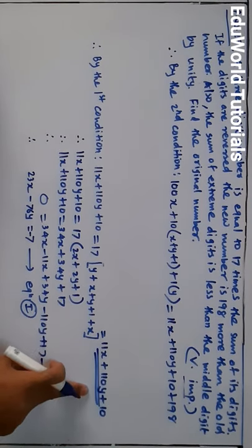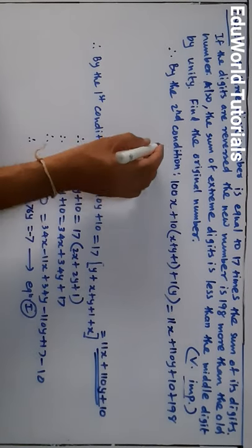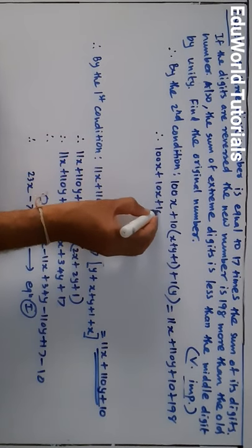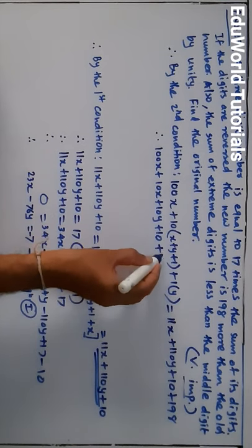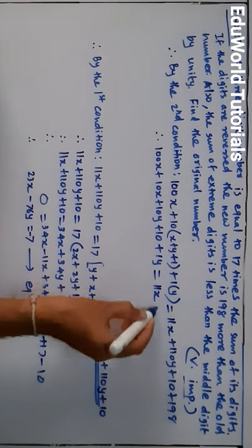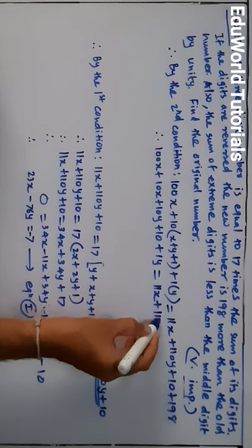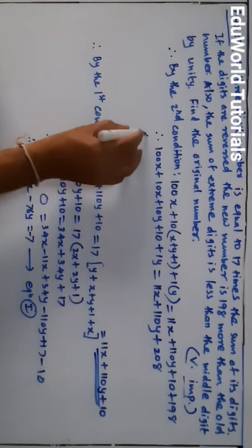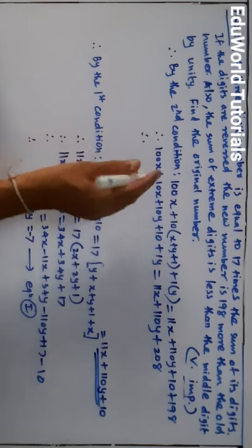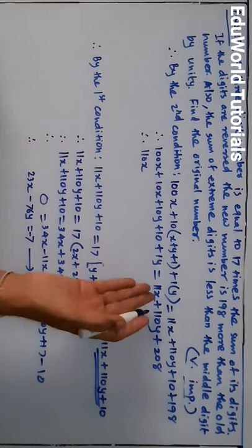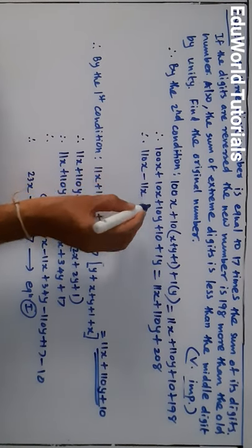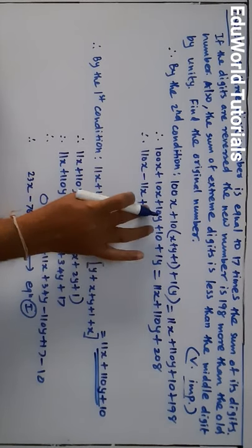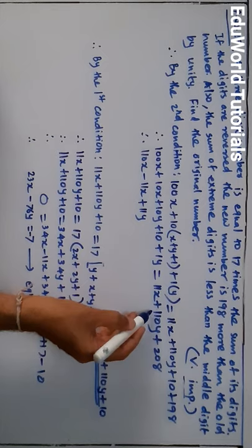This is the original number. From this we will make the equation. The equation will be: 100x + 10(x + y + 1) + y = 11x + 110y + 198 + 10, which is 208. Now we'll arrange the terms: 100x + 10x is 110x, and bring the 11x from the right side to the left as minus 11x. Then 10y remains plus 10y.